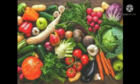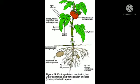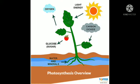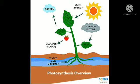Plants are also classified on the basis of mode of nutrition. Most plants make their own food with the help of carbon dioxide, sunlight, and water. This process is called photosynthesis.